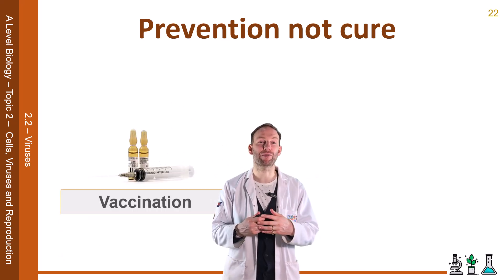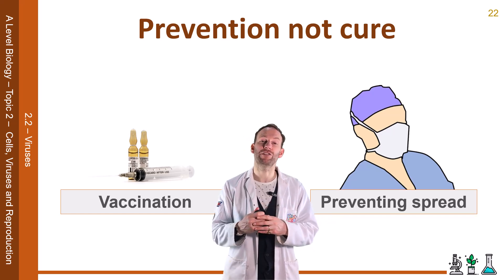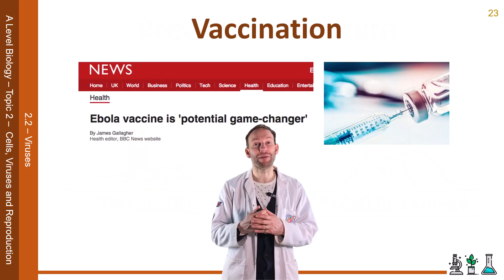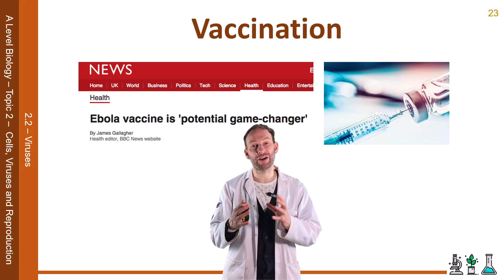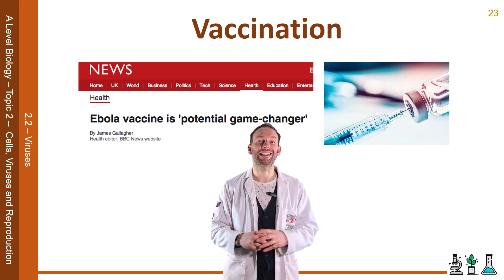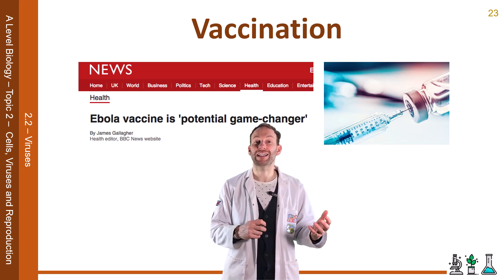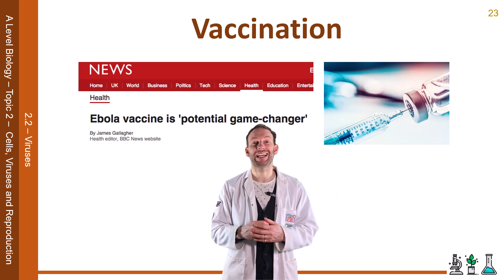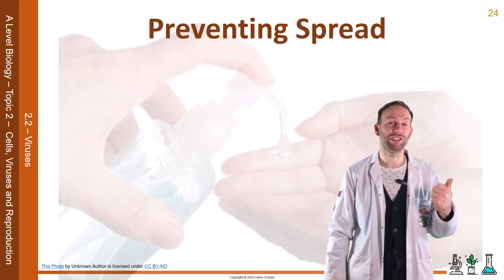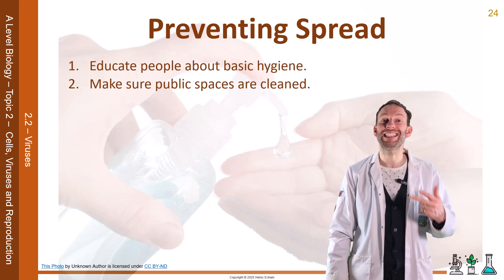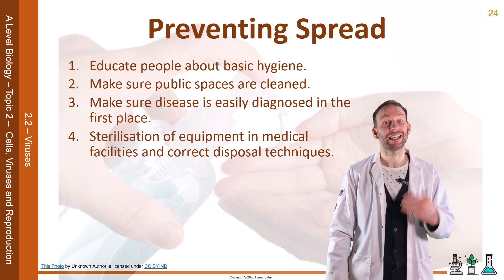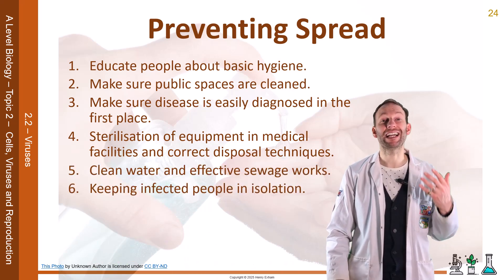Therefore, preventing transmission in the first place is the best approach. You can do this using vaccination or methods that prevent the spread. Vaccination is very effective and has helped eliminate many diseases that have killed millions of humans. If an epidemic occurs, you should vaccinate healthy individuals around the outbreak to make them immune and stop the spread. Two vaccines for Ebola have been fast-tracked to market. Other preventive measures include educating people about basic hygiene, cleaning public spaces, ensuring easy disease diagnosis, sterilising equipment in medical facilities, using clean water and effective sewage systems, and keeping infected people in isolation.